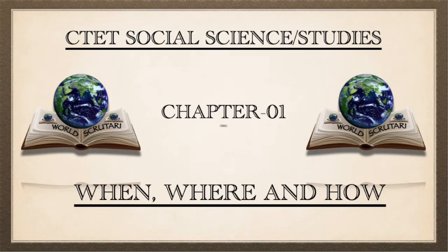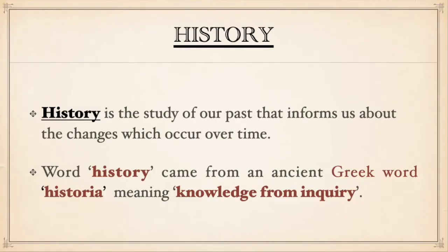When, where and how. 'When' means kab, 'where' means kaha, 'how' means kaise. Now all these three words notify us about an event that has occurred over time. History is the study of our past that informs us about the changes which occur over time. History tells us how it was in the past and how it has changed. This word 'history' came from an ancient Greek word meaning 'knowledge from inquiry.'